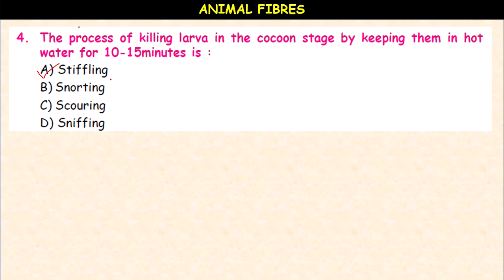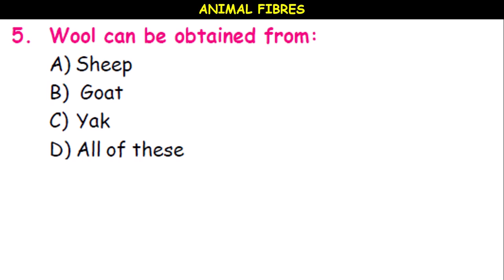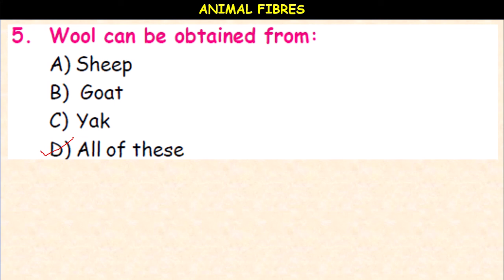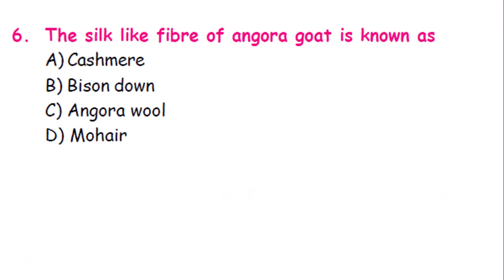Stifling is the process of killing larvae in the cocoon by heat treatment. Wool can be obtained from sheep, goat, yak — all of these. The silk-like fiber of the angora goat is known as Kashmiri, Bishandown, angora wool, or mohair? It is mohair — a very important question.